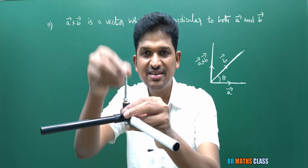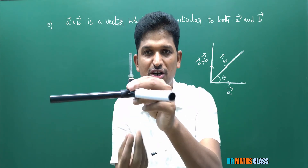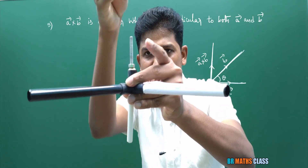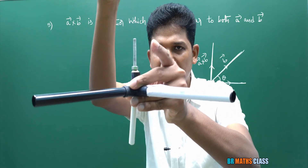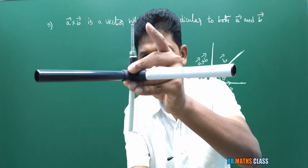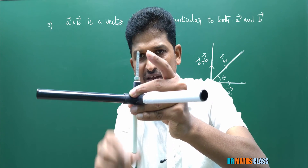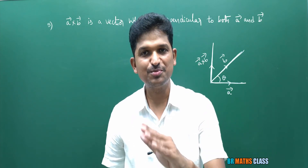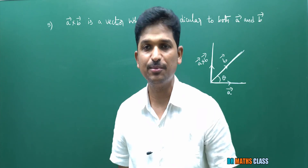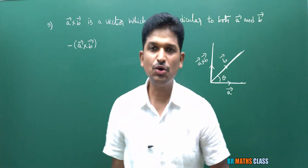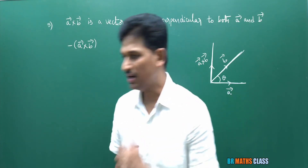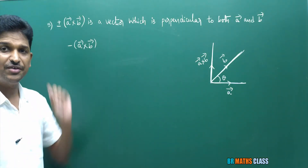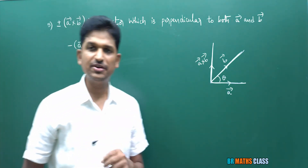One more important point: a̅ cross b̅ is perpendicular to a̅ and perpendicular to b̅. Also, minus of a̅ cross b̅ is also perpendicular to both a̅ and b̅. So we can write: plus or minus a̅ cross b̅ — both are perpendicular to both a̅ and b̅.